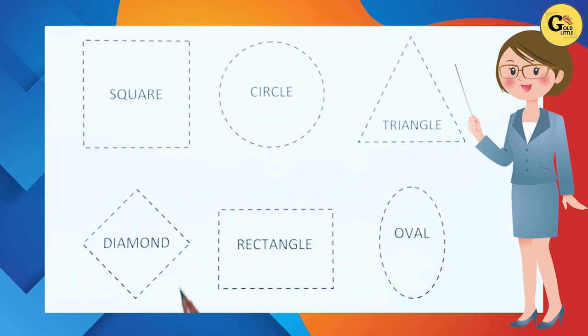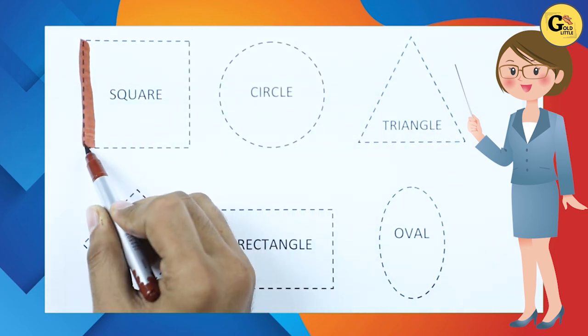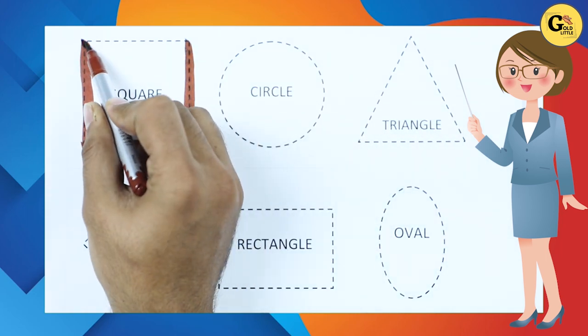It's a square. We draw square with brown color. Square.